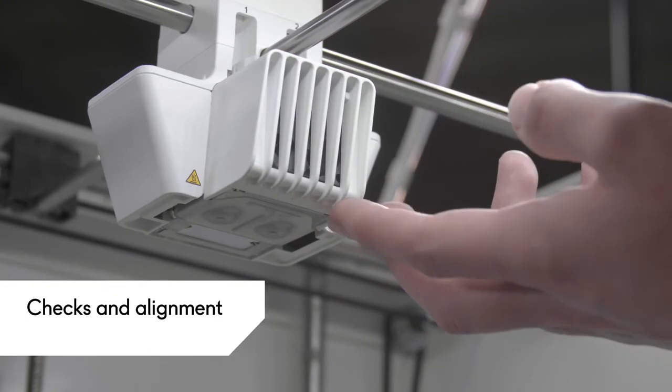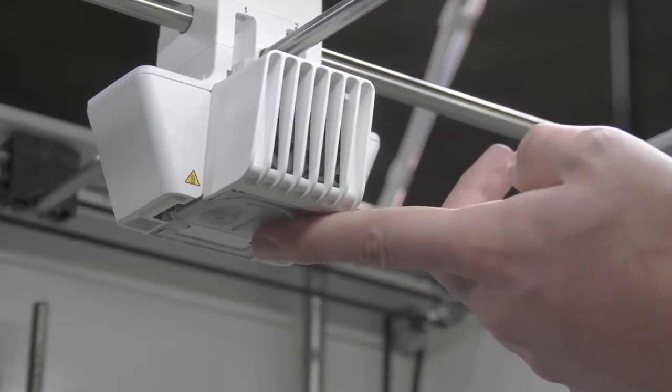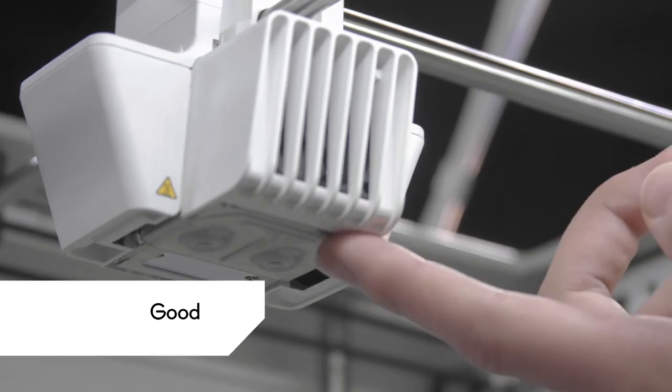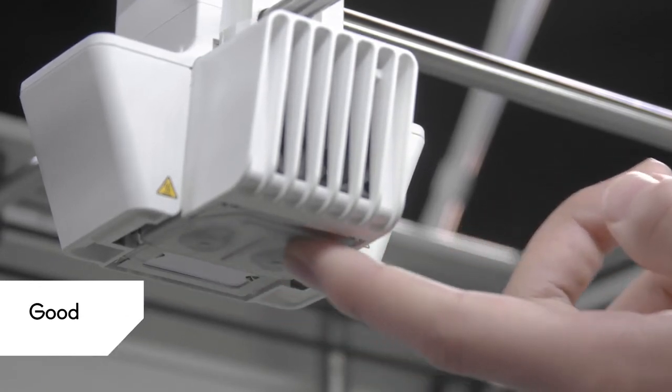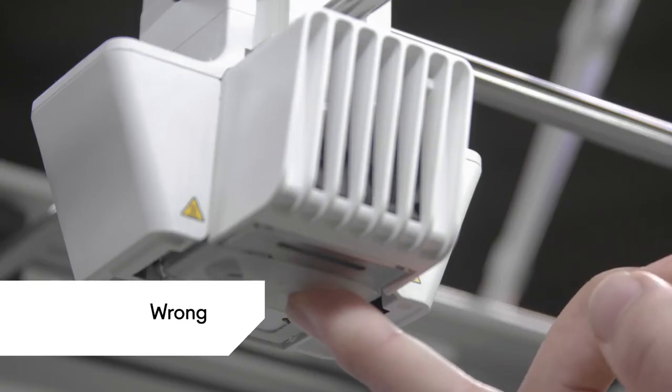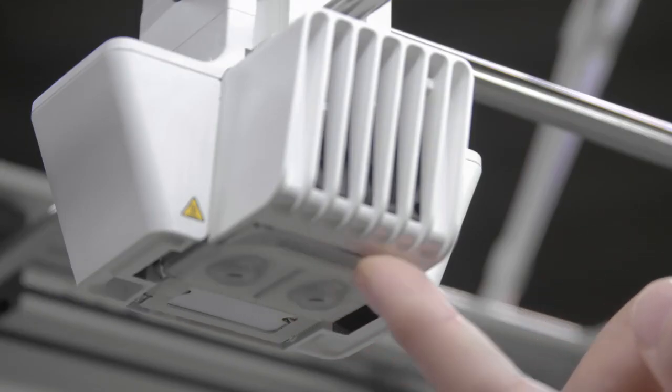It's very important that the nozzle cover is placed correctly, so first, perform a small check. Slide your finger across the bottom of the printhead. If the nozzle cover easily detaches from the fan bracket, it's not correctly placed. Repeat the necessary steps.